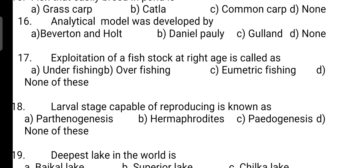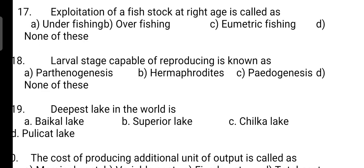Exploitation of fish stock at the right age is called? The correct answer is Option C — it is eumetric fishing. Next, larval stage capable of reproducing is known as? The correct answer is Option C — it is pedogenesis.